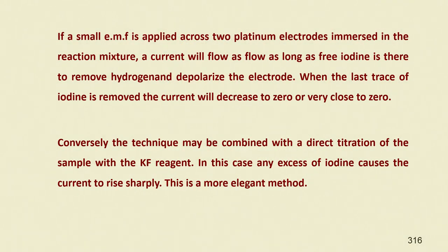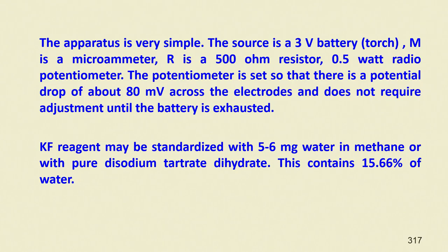This provides a very sharp endpoint for the electrochemical titration, which is obviously a more elegant method. The Karl Fischer apparatus is also very simple: it has a 3-volt battery, a microammeter, a 500-ohm 0.5-watt resistor, and a radio potentiometer.